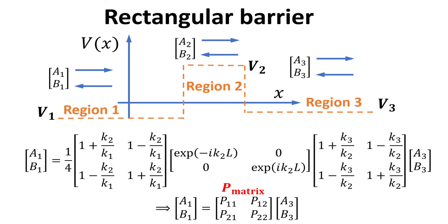This allows us to concatenate the propagation matrices, allowing us to express the scattering amplitudes vector in region 1 with that of region 3. The multiplication of these three matrices can be performed with software like Mathematica. Effectively, we can obtain a 2 by 2 matrix known as the propagation matrix. We denote the elements of this matrix P11, P12 and so on.